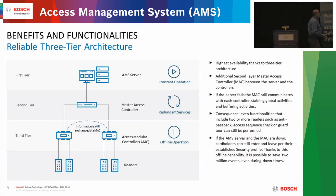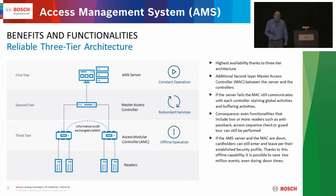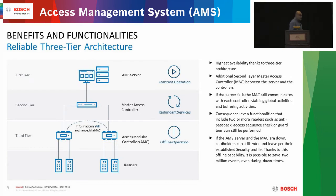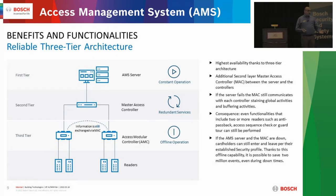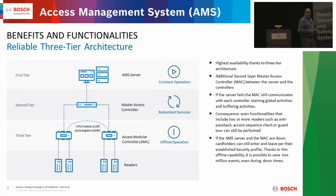This is our three-tier architecture — a very reliable, comprehensive, and secure structure. You've got the first tier being your server. We have our MAC, our Master Access Controller, which maintains the operations of the system: collecting information, passing it up to the server, passing it down to your controllers. If I lose my server, my MAC will pick up those activities so I don't lose my global anti-passback or my global connections. My MAC will buffer the history of things taking place, so when the server comes back online, I can upload that information.